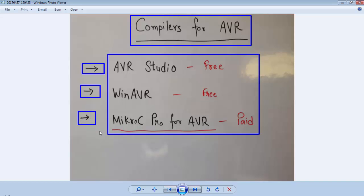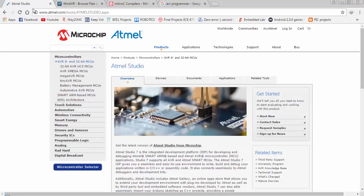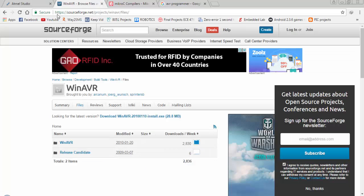And third one is MicroC Pro for AVR which is a paid version of the compiler. If you want to download AVR Studio then you have to go to atmel.com and under the download section you can download AVR Studio for AVR. If you want to download WinAVR for AVR microcontrollers then you have to go to sourceforge.net and you can download the WinAVR latest version from this website.